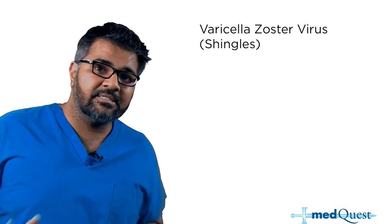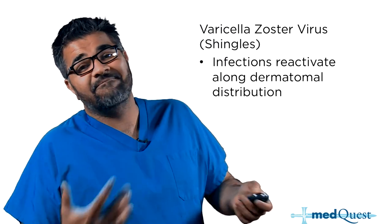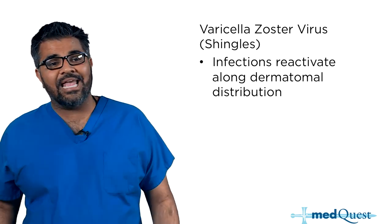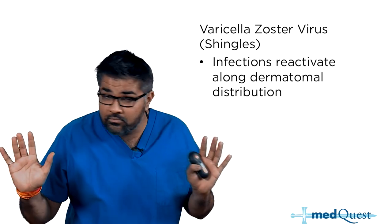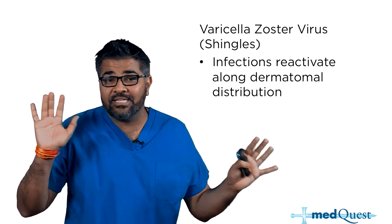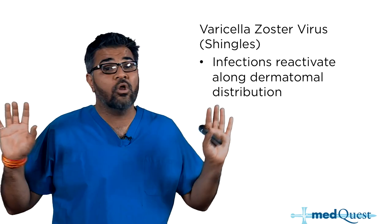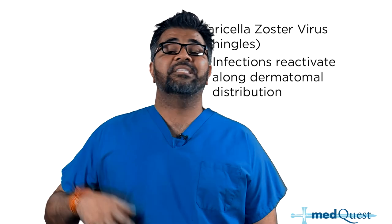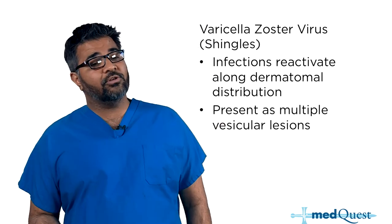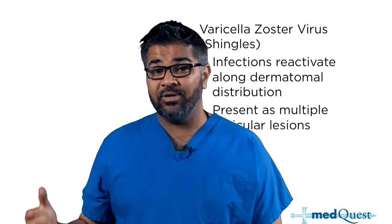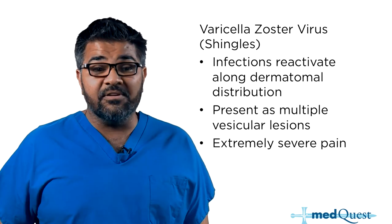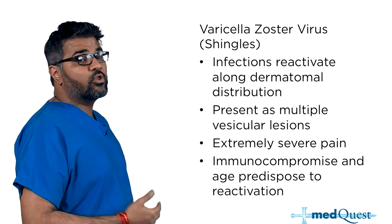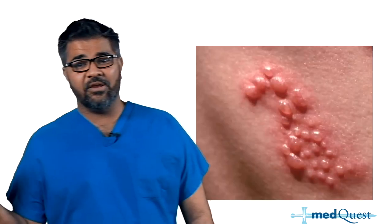Shingles is varicella zoster virus — it's a reactivated infection that presents along a dermatomal distribution. The zoster virus is dormant in your nerves, waiting for you to become severely immunosuppressed, very stressed out, or have recent surgery before it reactivates. It presents as multiple vesicular lesions along a dermatomal pattern, starting itchy and then becoming very painful. The immunocompromised and those on prednisone are most prone to getting it.